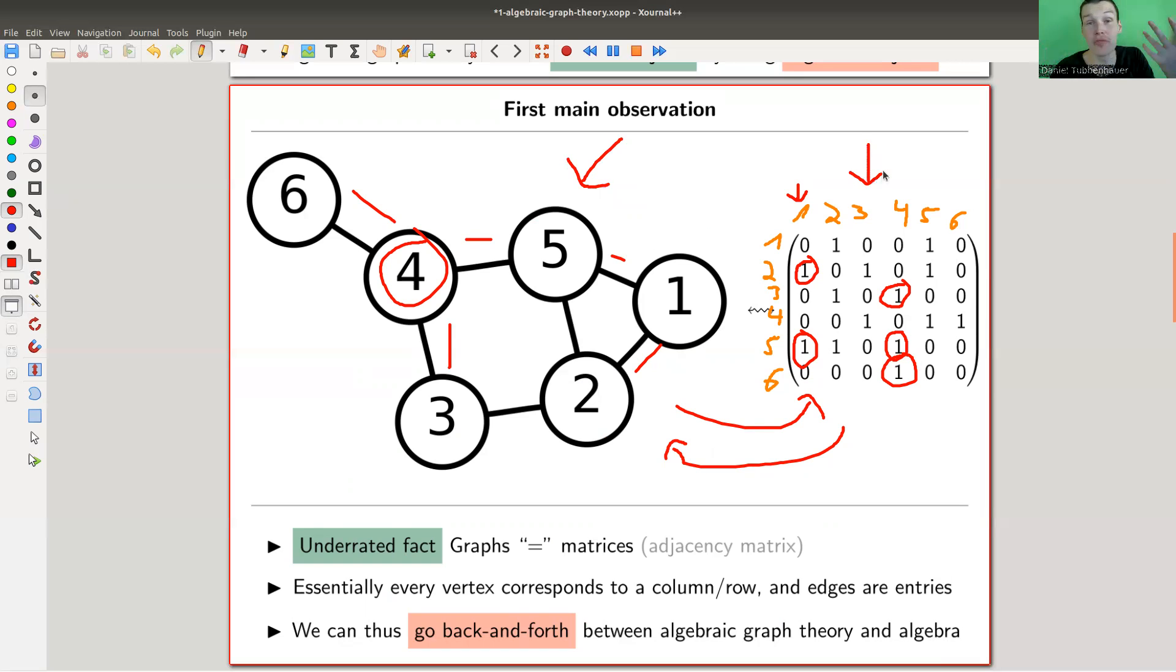Now we can study properties of our little graph here using matrices. And we can also do the other way around. Most properties you want to know about graphs, you use the tools from algebra to attack them. But in principle, we can go back and forth because it's the same type of data. A graph is a matrix, and a matrix is a graph. This is one of the most underrated facts in all of mathematics.